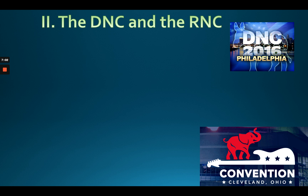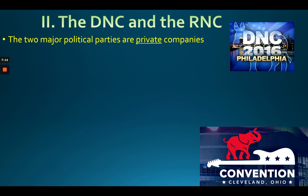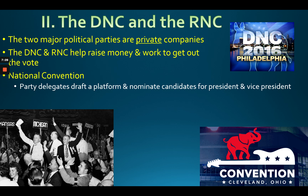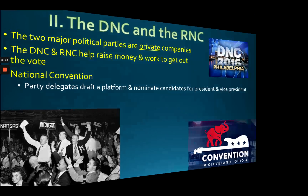The Democratic Party is called the DNC — the Democratic National Committee — and the Republicans have the RNC. Every four years they hold a major convention, which is really like a pep rally. They get a lot of free airtime, and the party delegates draft a platform listing what they want to achieve — their goals and beliefs. That's also when they officially nominate the candidates for president and vice president.